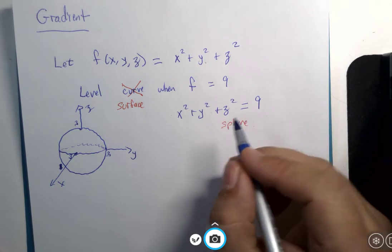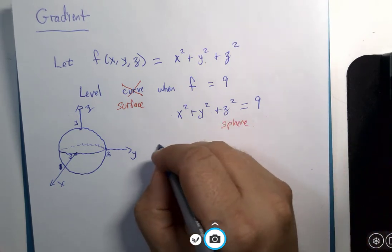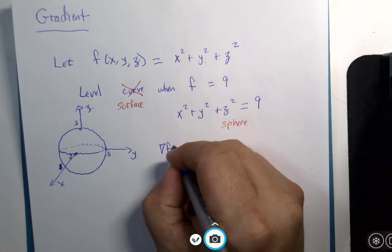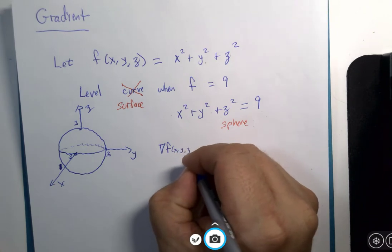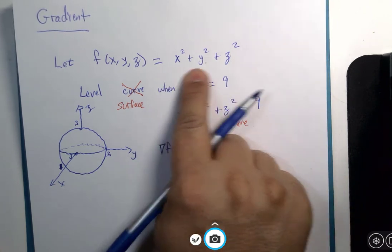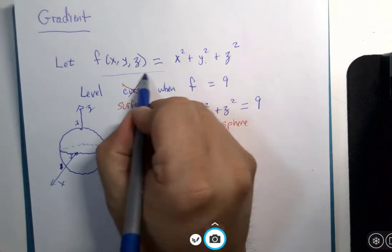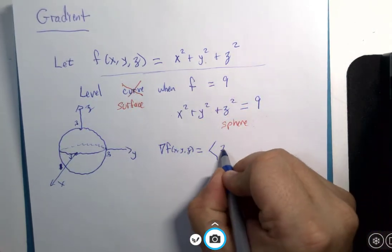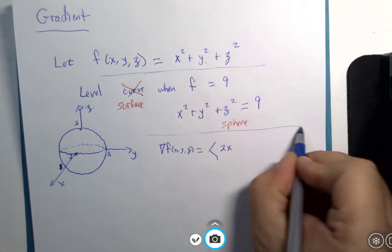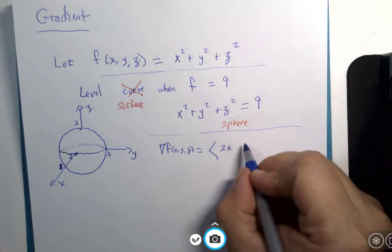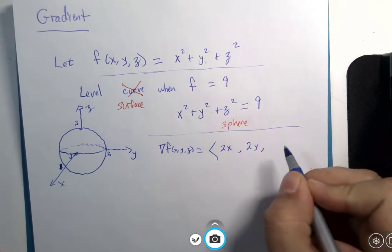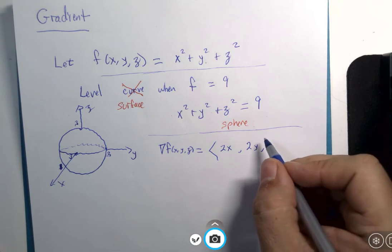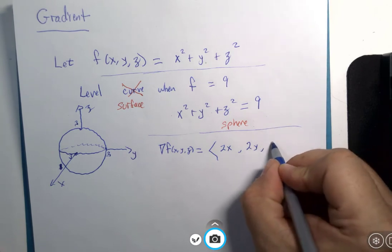So, let's go ahead and do the gradient calculation. The gradient of f of x, y, z, and the x partial derivative is 2x. And the y partial derivative is 2y, and the z partial derivative is 2z.